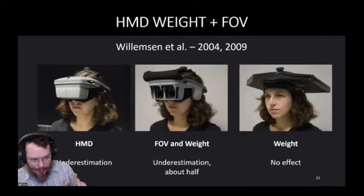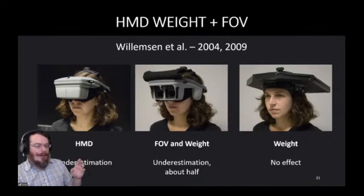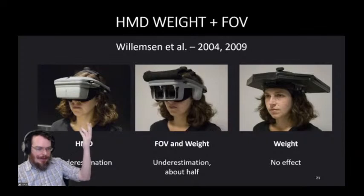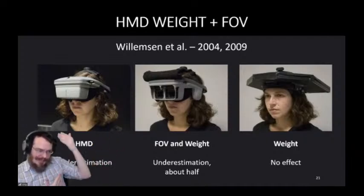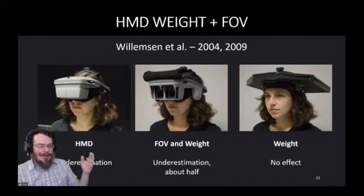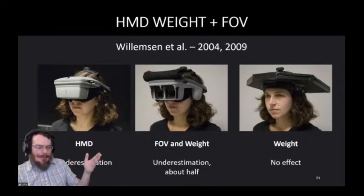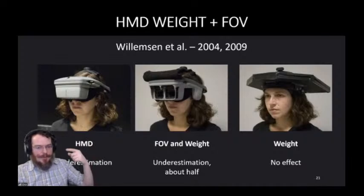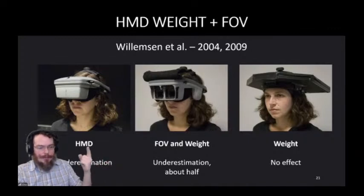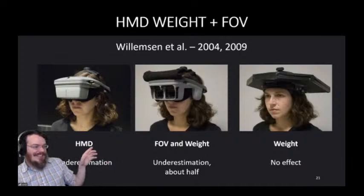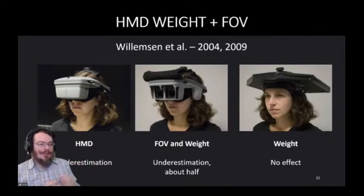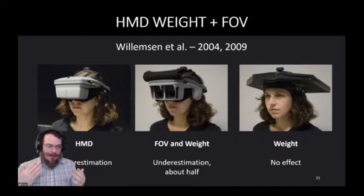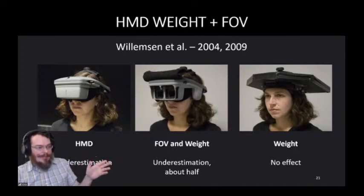Creem-Regehr et al. built a sort of mock head-mounted display with restricted field of view. Current head-mounted displays are maybe 100 degrees. This was more like 30 or 40 degrees. It's greatly restricted. If anything would cause distance misperception due to restricted field of view, you'd expect this to do it. They saw no effect unless they coupled it with a neck brace to restrict head rotation. Then they see about half of the underestimation you'd see with a comparable head-mounted display.